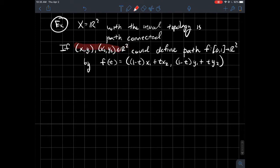I'll just take the line segment that connects those two points. So that would be the function f, where the first coordinate should be (1-t) times the first x-coordinate plus t times the second x-coordinate.